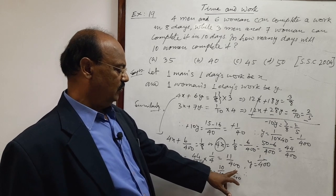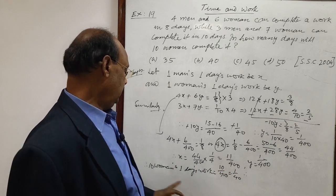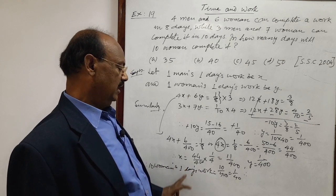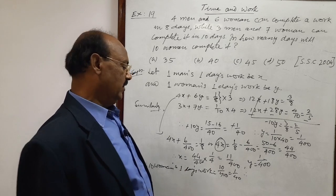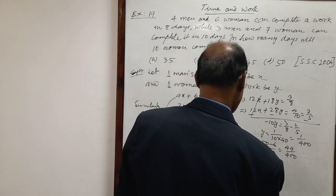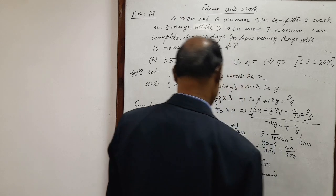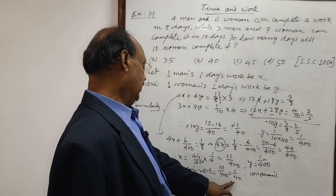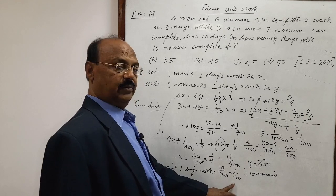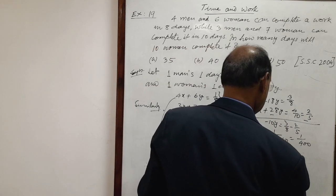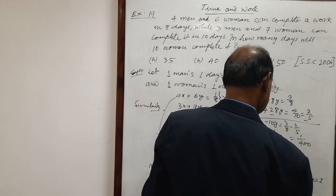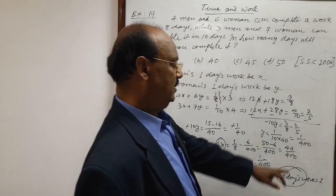Amount of work is reciprocal of the number of days. Because one by forty work is being done in one day. So one work will be done by ten women in one upon one by forty. So required answer is forty. Therefore, ten women's forty days work is equal to one. So answer is this: forty days. This is the answer.